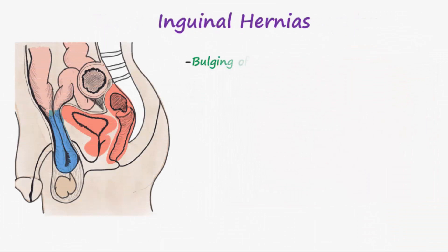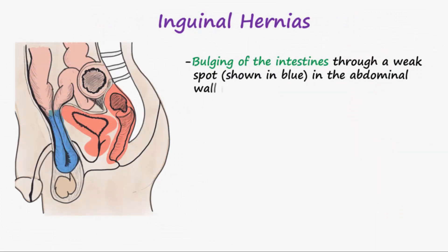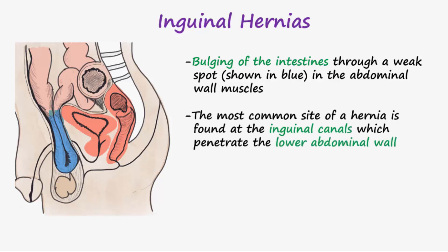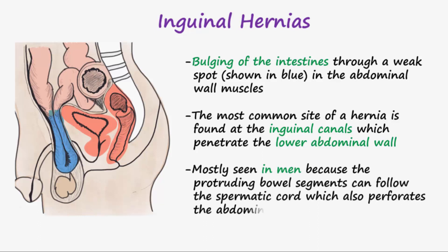Inguinal hernias are a bulging of the intestines through a weak spot in the abdominal wall or muscles. The most common site of hernia is found at either of two passages called the inguinal canals, which penetrate the lower abdominal wall on each side of the groin. Inguinal hernias are far more common in men because the protruding bowel segments can follow the spermatic cord, which also perforates the abdominal wall. In extreme cases, bowel segments can fold down into the scrotum.